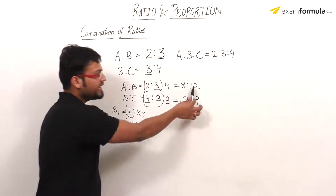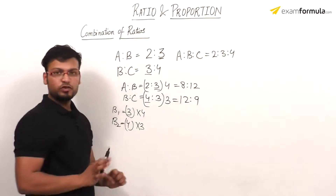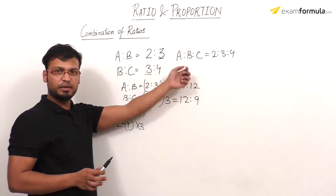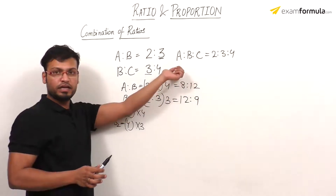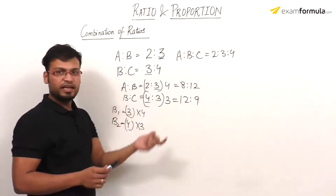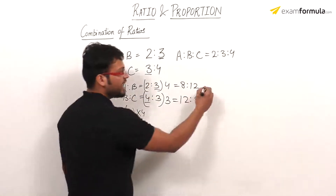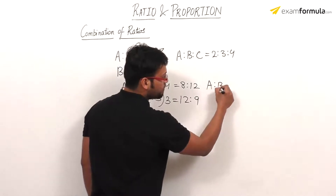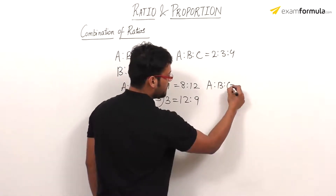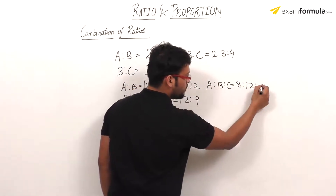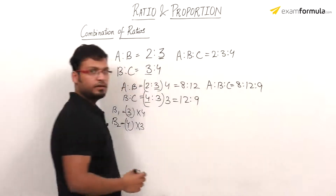Now I can see that B's value is the same in both. I have done the same process as in the previous question. Similarly, I can easily say that the value of A ratio B ratio C will be 8 ratio 12 ratio 9.